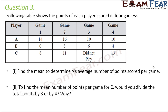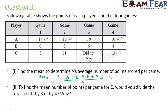Question number 3: the following table shows the points each player scored in 4 games. First, find the mean to determine player A's average number of points scored per game. A played in all 4 games, so the mean equals the sum of A's scores divided by 4: (14 + 16 + 10 + 10) divided by 4 = 50 divided by 4 = 12.5. So 12.5 is the average score of player A per game.